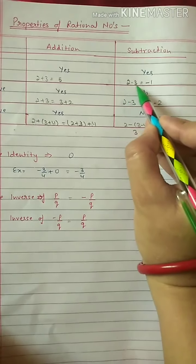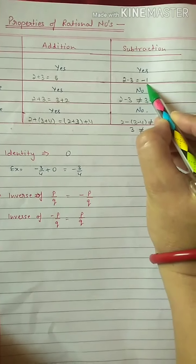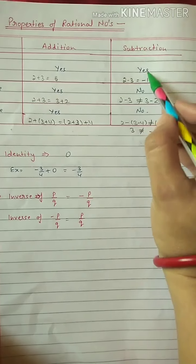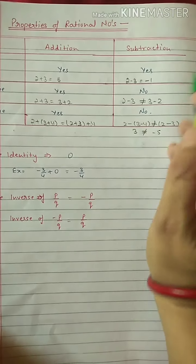For subtraction, closure property: 2 minus 3 equals minus 1, which is a rational number. So this property is correct for subtraction.